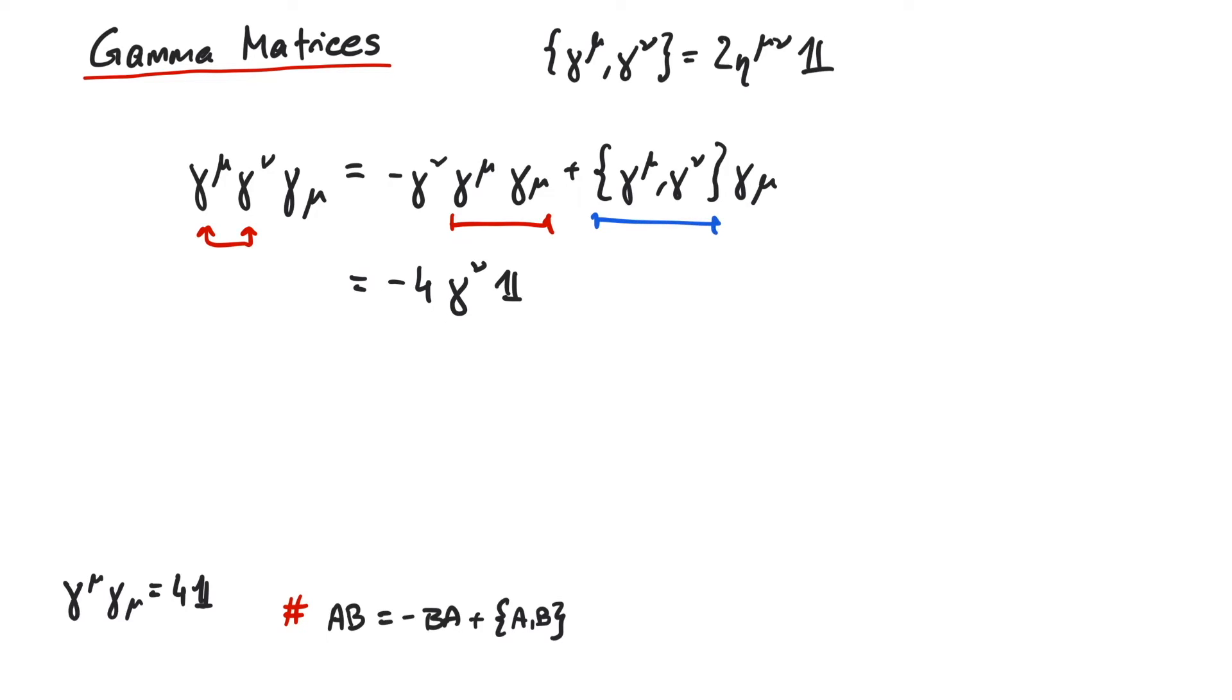And for this part here, we use the Clifford algebra. So this is 2 times eta mu nu, identity matrix, and gamma mu.